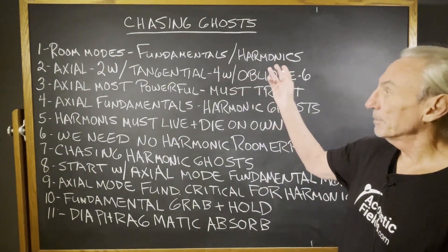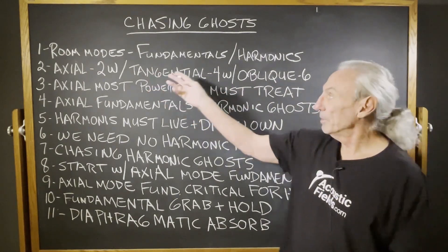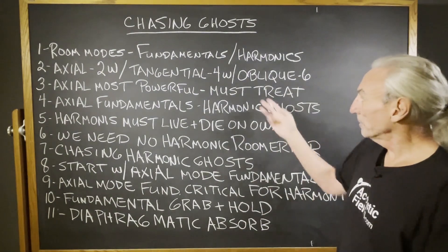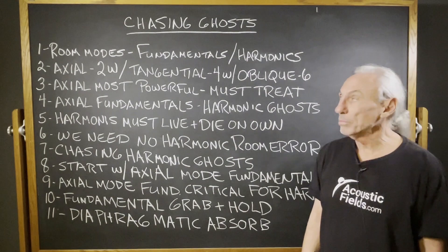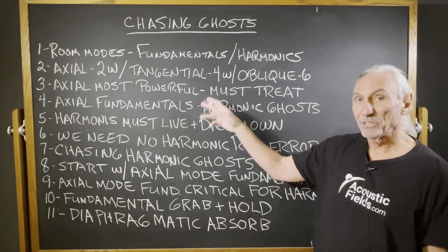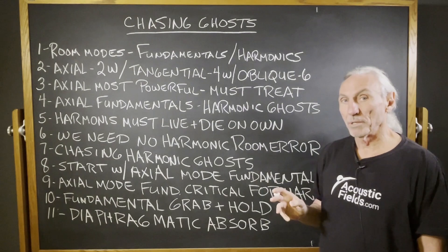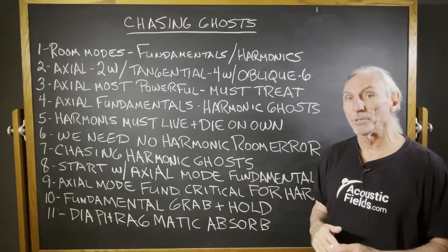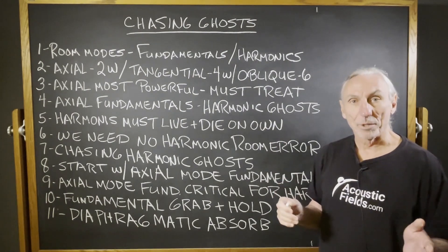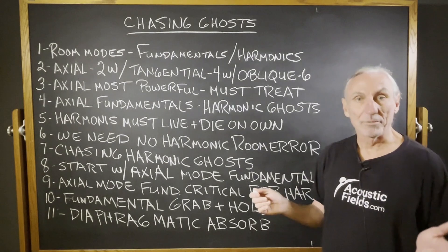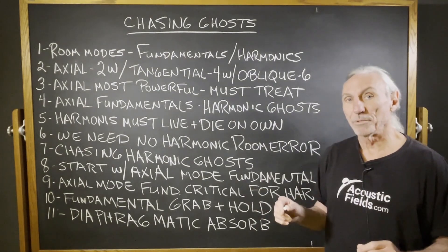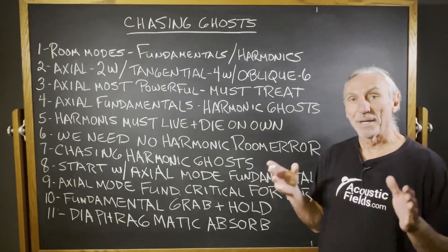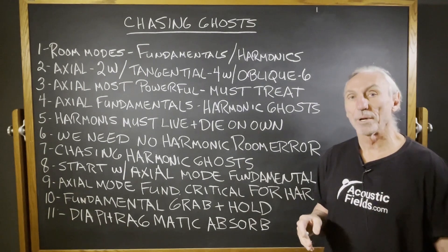We know we have fundamentals and harmonics. The axial modes are two-wall issues, the tangential are four-wall, and the oblique are six-wall. The axial modes are the most powerful — we must treat those. When you send in your room form and I do the analysis, I always look for the axial modes first; they usually start around 40 and go to 100 Hz. A 40 Hz problem is also an 80, 120, and 160 Hz problem — that's the first, second, and third order harmonic.